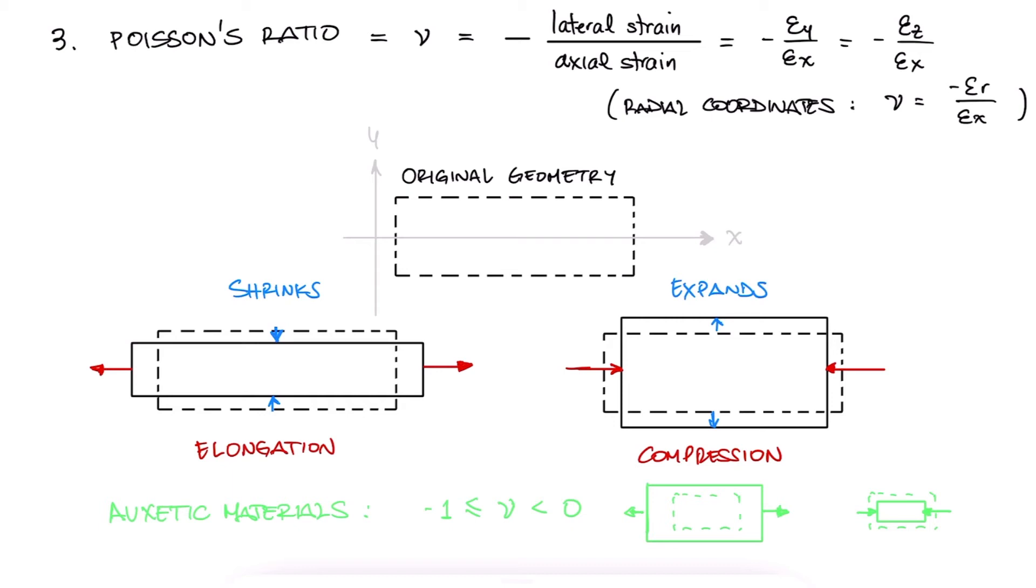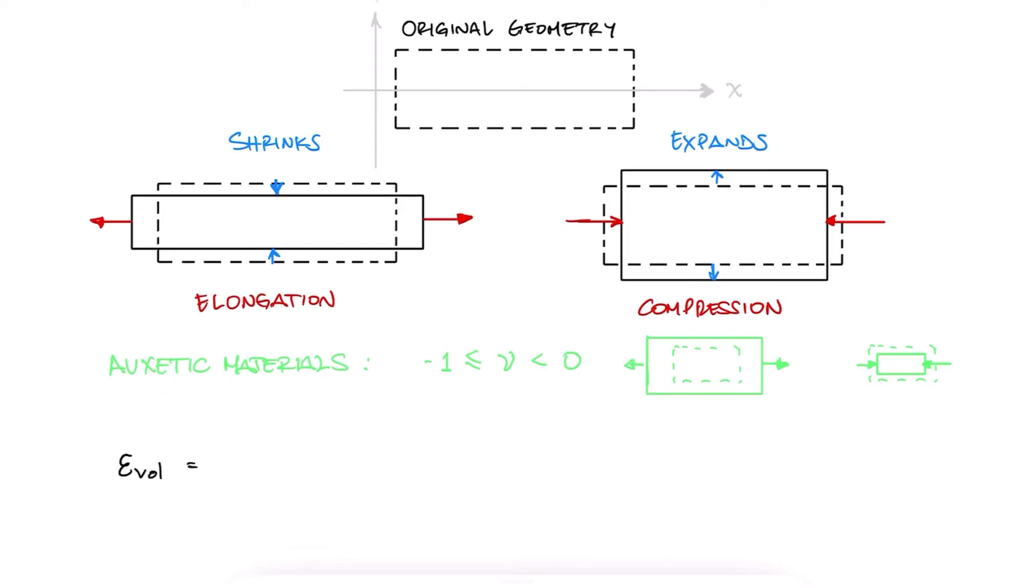For this reason, Poisson's ratio values of traditional engineering materials will be positive. And since the volumetric strain is the sum of the strains in all orthogonal directions, if Poisson's ratio was larger than 0.5, then by substituting the strain in y and the strain in z in terms of the strain in x, we'd easily see that the volumetric strain would be negative.